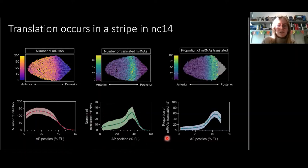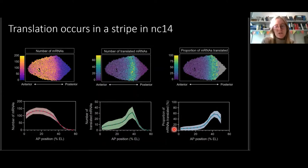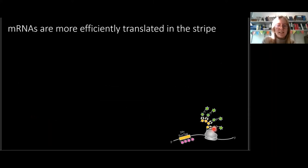When we look at the percentage of mRNA that is translated, only around 10% of mRNAs are translated in the anterior, whereas this increases to around 60% in the stripe region. So it appears that translation of mRNAs is repressed in the anterior in Nucleocycle 14. This repression has not been described before — you couldn't see it by simply comparing the protein and mRNA distributions, because there is still protein in the anterior from the previous translation occurring in Nucleocycle 13.